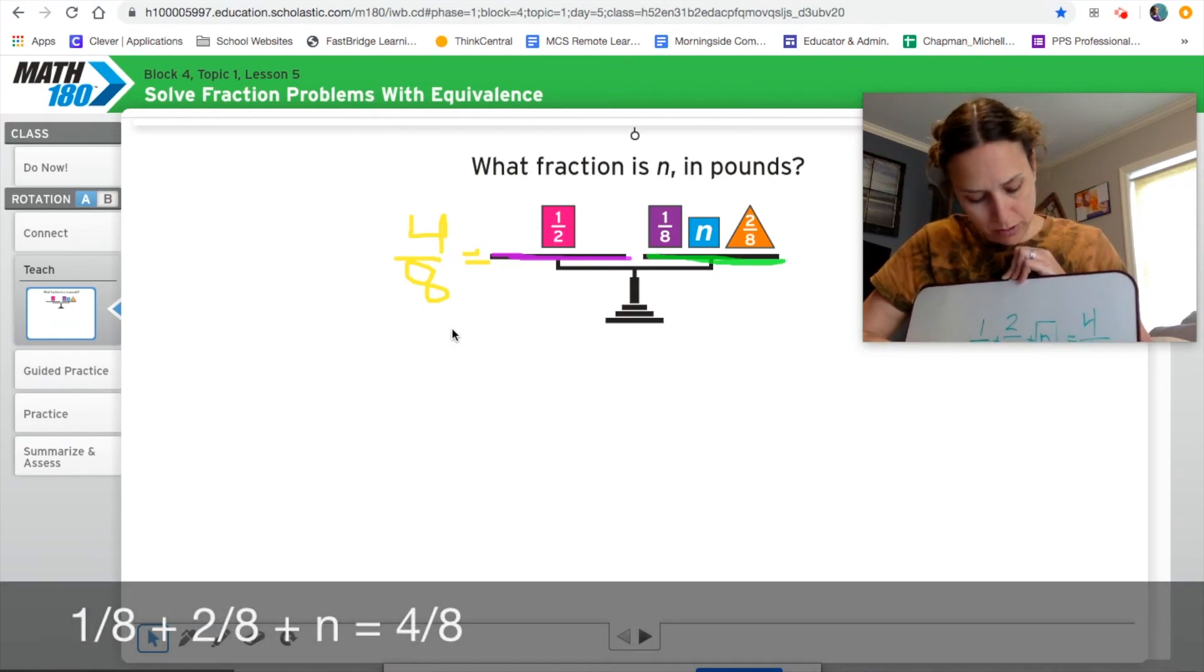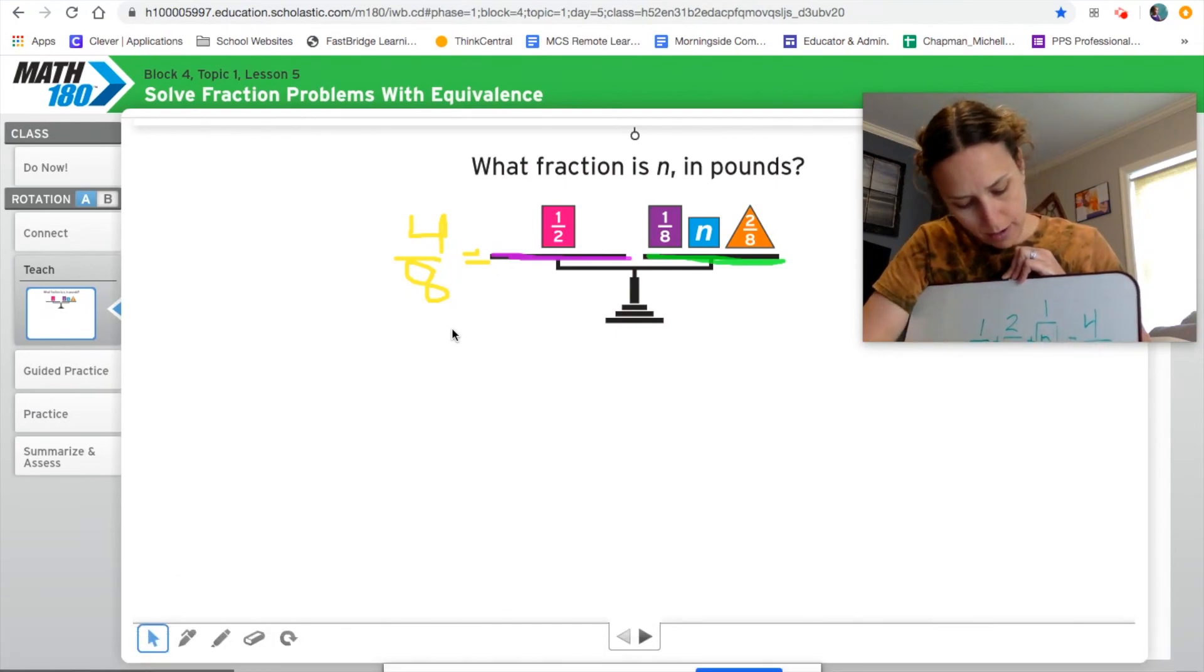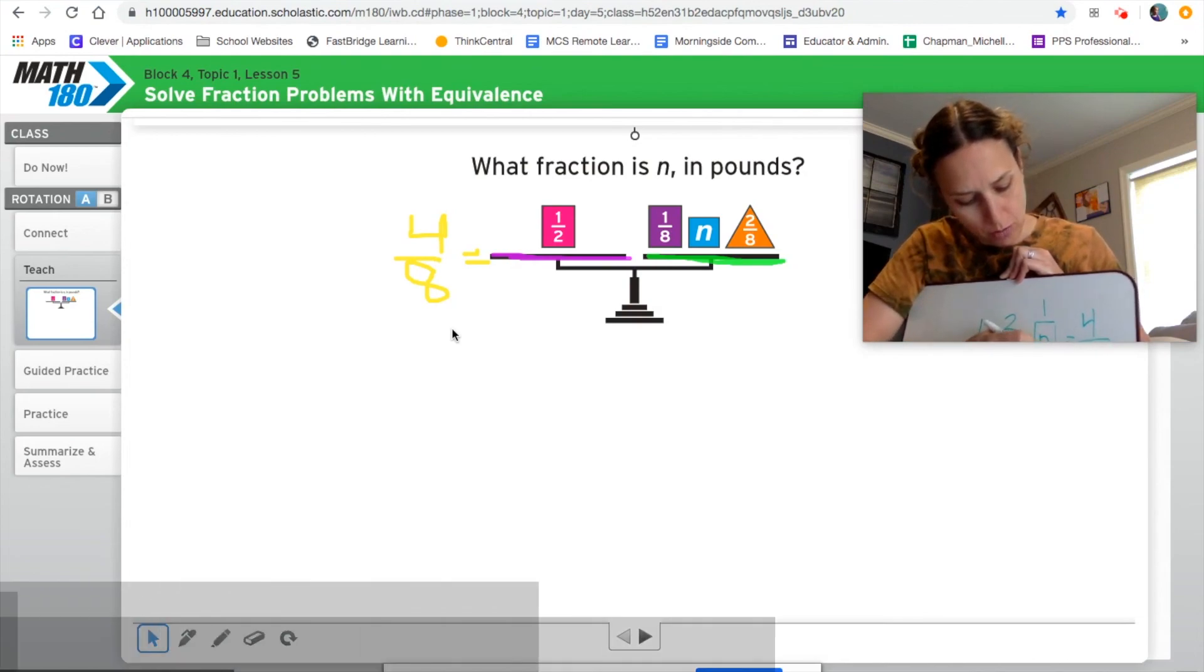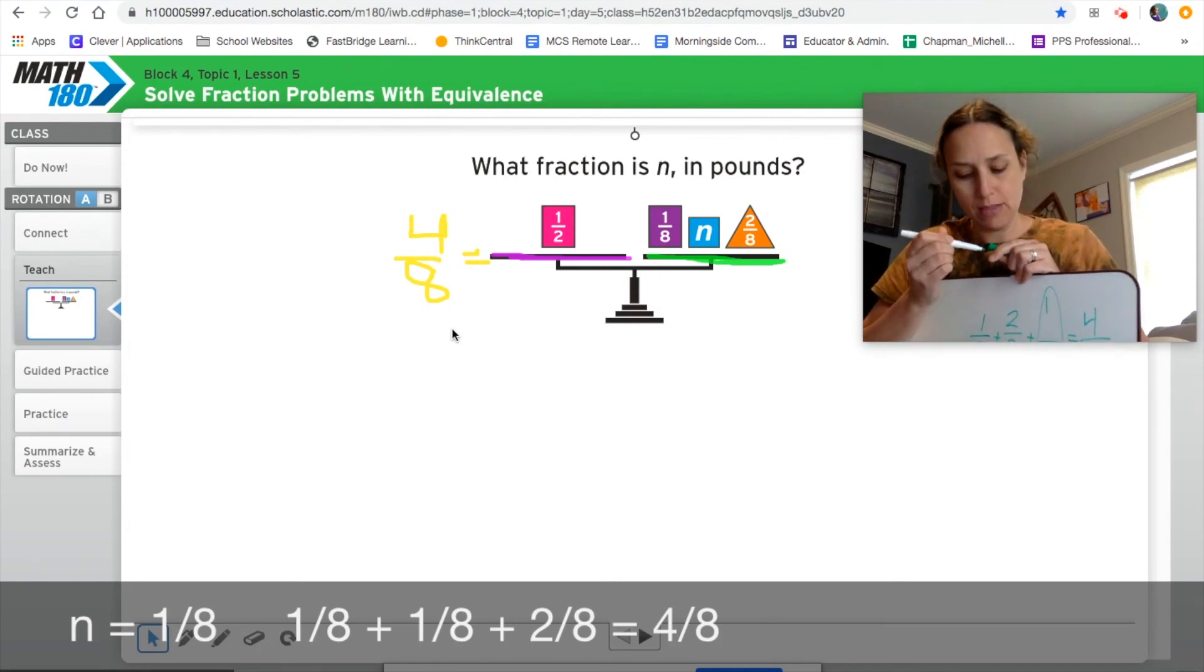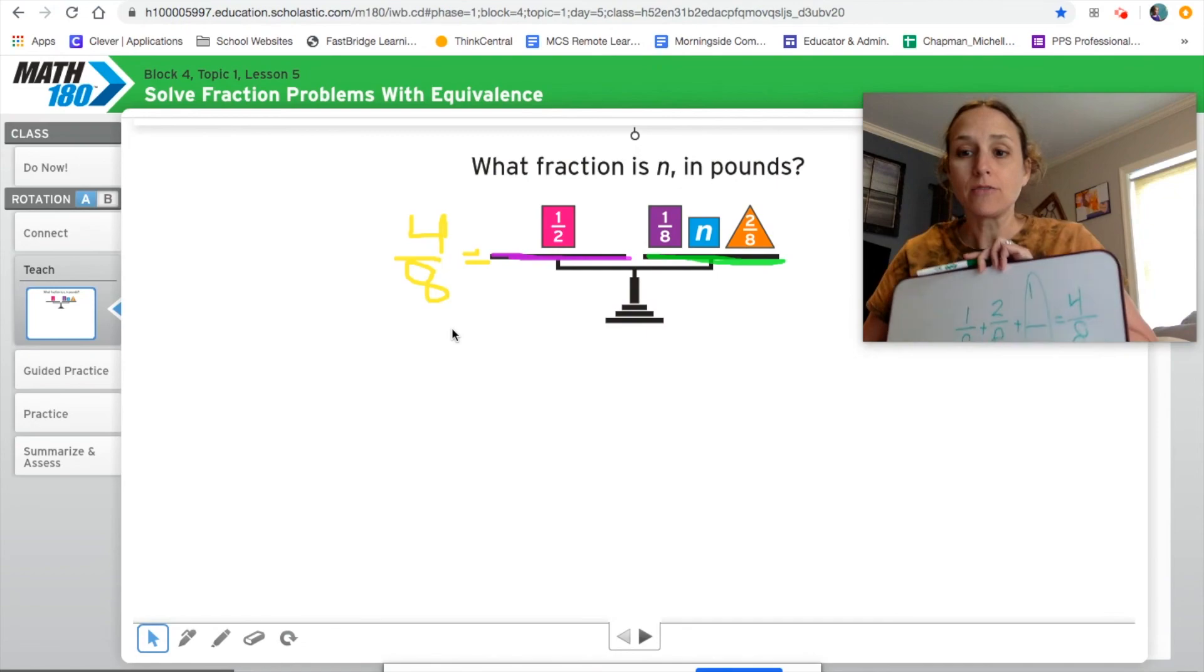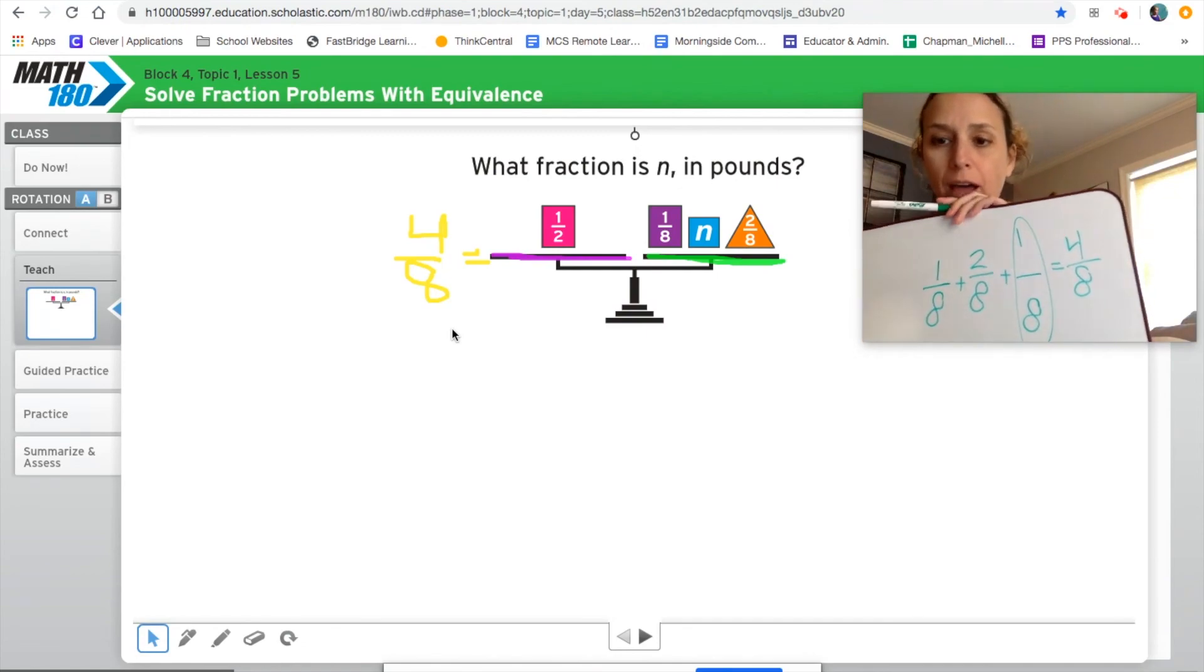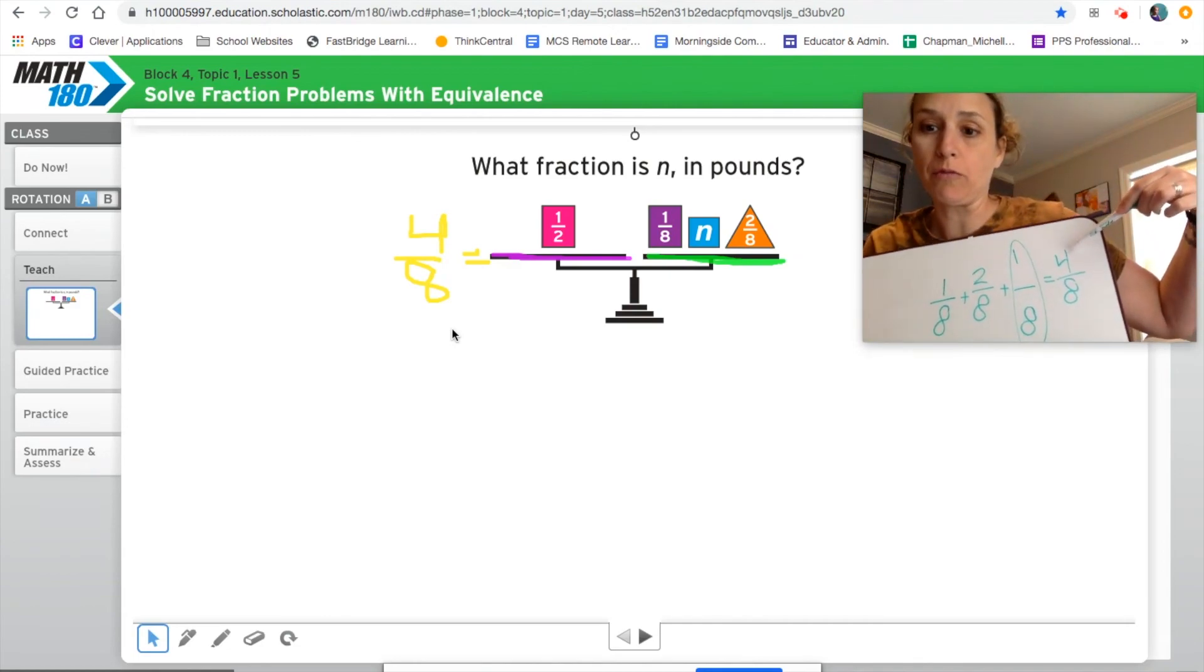Well, one plus two is three, and three plus what is four? One. And our denominator has to be an eighth in order to add it. So this unknown number is actually one-eighth. And that's what we're looking for today. So once we find those equivalents, which we've been working on, this part of it is really easy, just adding up those fraction parts to get the new equivalent fraction that we found.